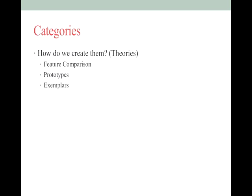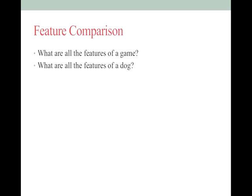Let's start with feature comparison theory. If I asked you to think about all the features that make a game a game, lots of people list things like players, rules, equipment — either sports equipment or something like a checkerboard — and then winning or losing, some sort of outcome to the game. That tends to be the most common list of features, plus a bunch of other things depending on your personal experience.